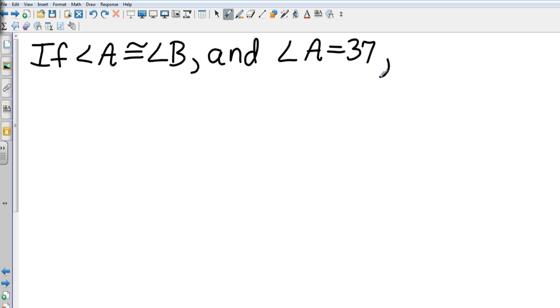Let's look at 3a on page 136. If angle A is congruent to angle B, and angle A equals 37, then angle B equals 37.